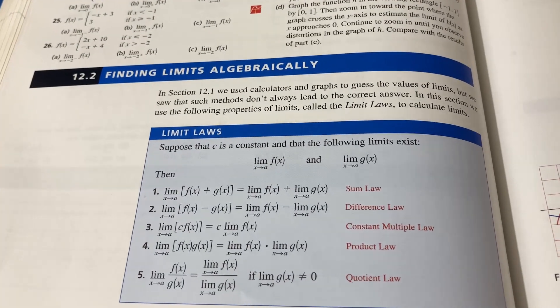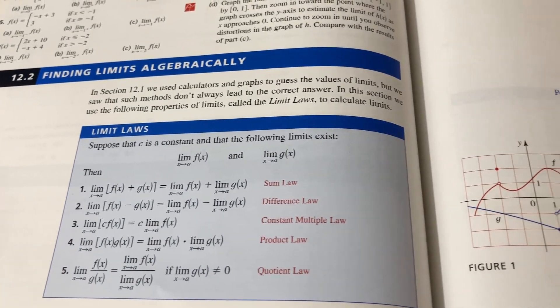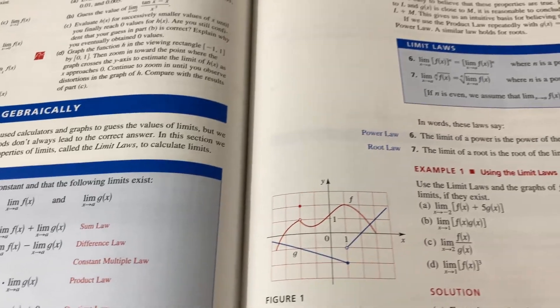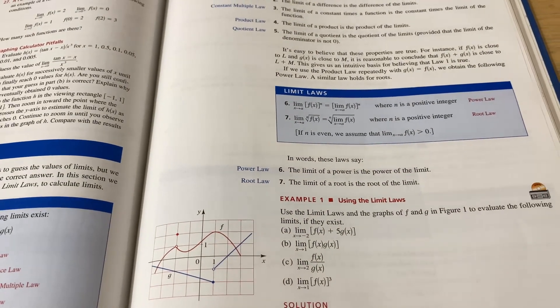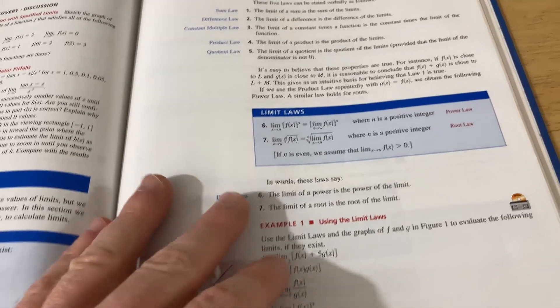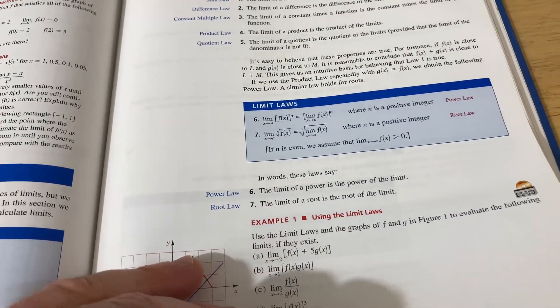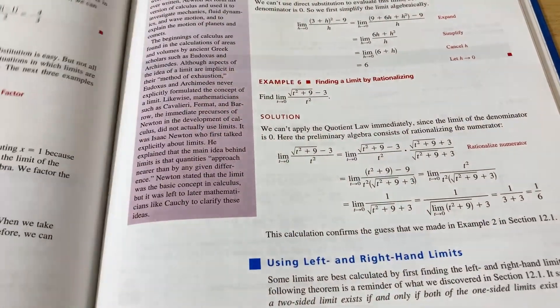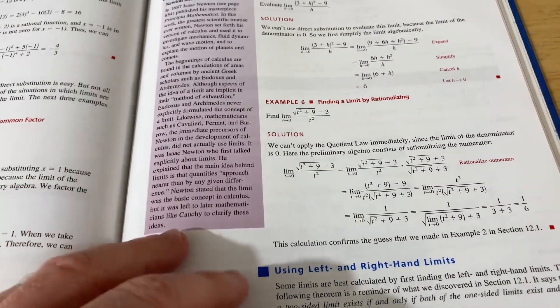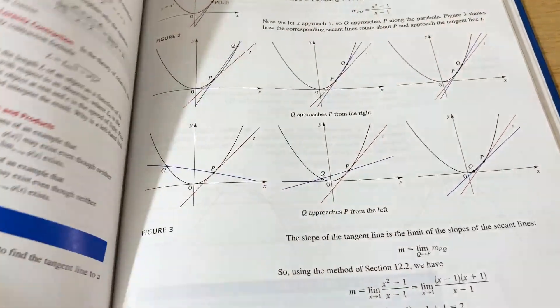12.2 is when it really gets good because you're finding limits algebraically. Again, something you definitely see in a calculus one course and usually you're tested on this on your first exam in calc one. The nice thing about this section is that usually lots of test questions come from a section like this because there's so much variety in the examples. So this is a really good section to really sharpen your calculus skills with.